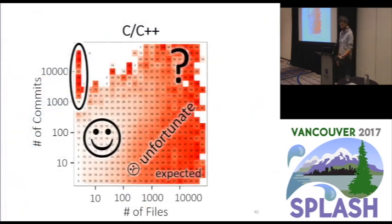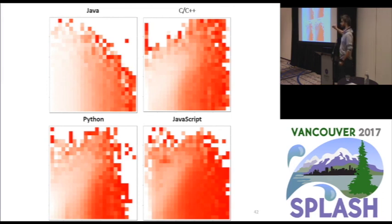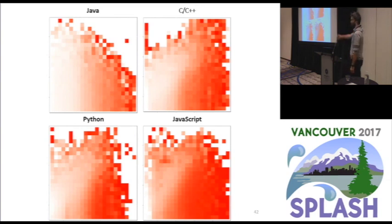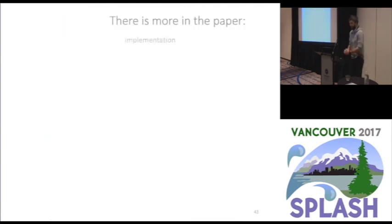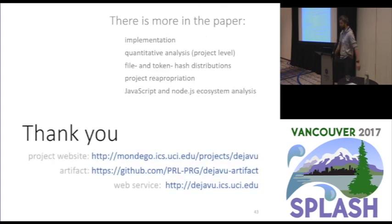Back to the other languages — looking at the heat maps, things are roughly as expected. Two things to point out: in Java, the clone-duplicate ratio does not seem to depend much on number of commits, only on project size. Also, people really want to be rockstar C/C++ and Python programmers — they are not as interested in Java and JavaScript. There is a lot more in the paper. I'll be happy to take any questions, either now or offline. Thank you for your attention.